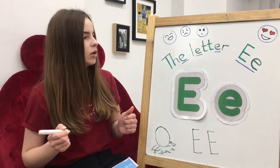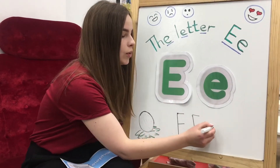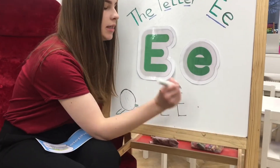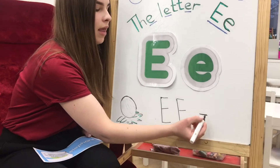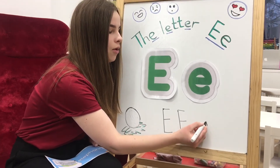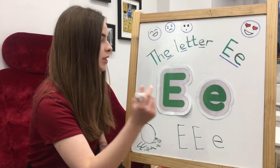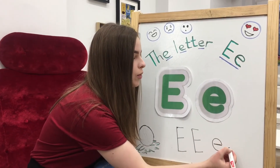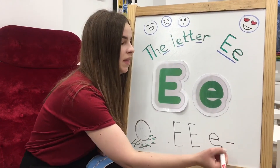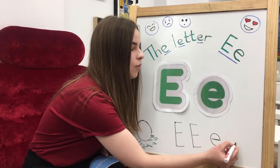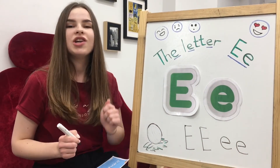What about the small letter E? Look! We start in the middle and make a short line. Then we go round. Let's do it one more time. We start in the middle and make a short line. Then we go round. Great job!